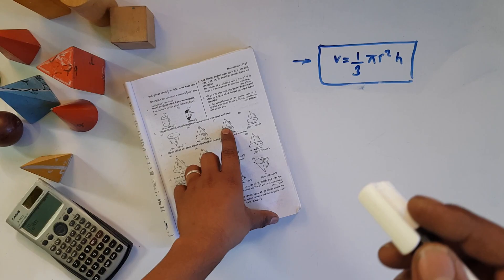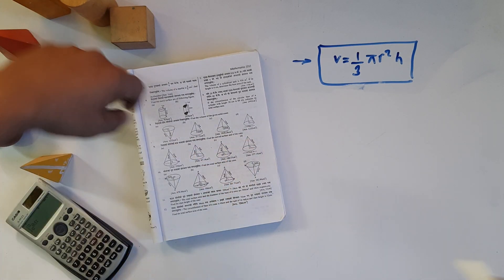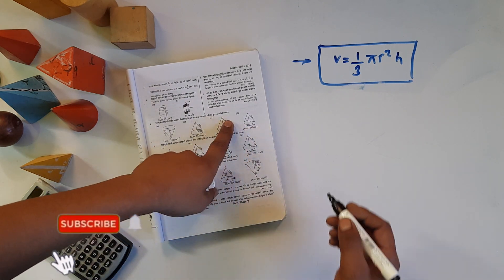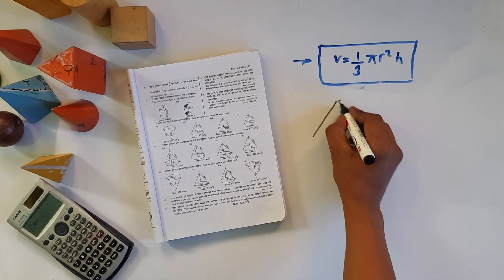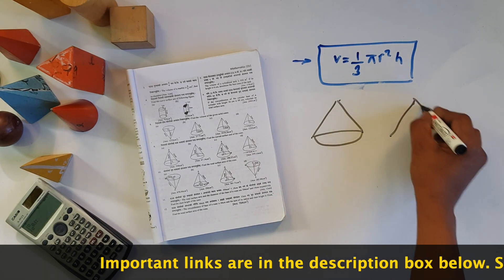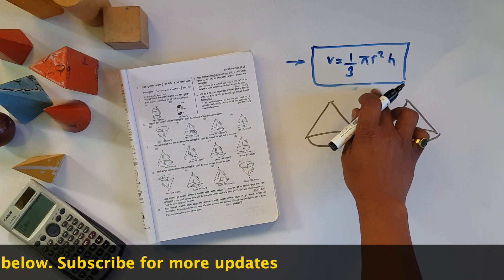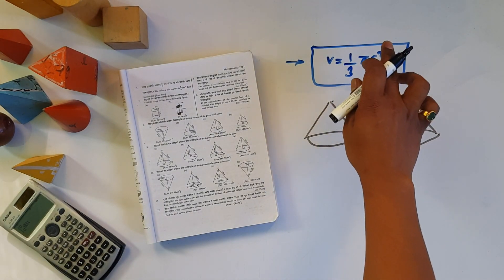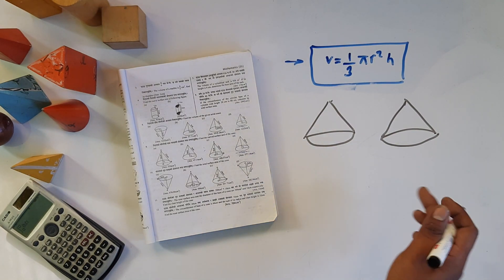Now I have to derive the volume of a solid cone, so let me remind you of the formula. The volume of a cone is 1 by 3 pi r squared h.